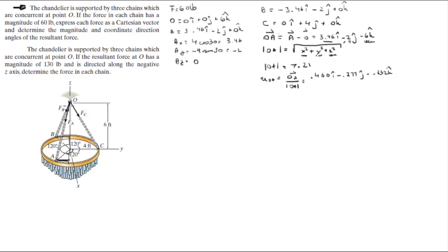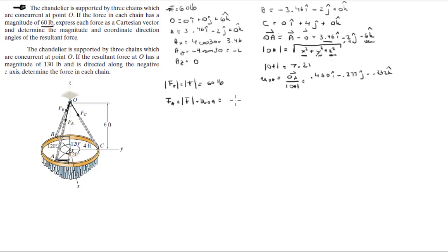Now that we have the unit vector along OA, we can find the Cartesian vector form of force FA. The magnitude of FA equals 60 pounds (same as all three forces). So FA equals the magnitude times the unit vector: FA = 60 × (0.480i - 0.277j - 0.832k) = 28.8i - 16.62j - 49.92k pounds.